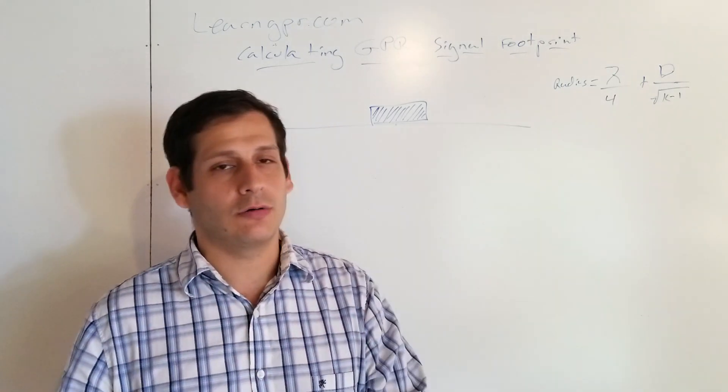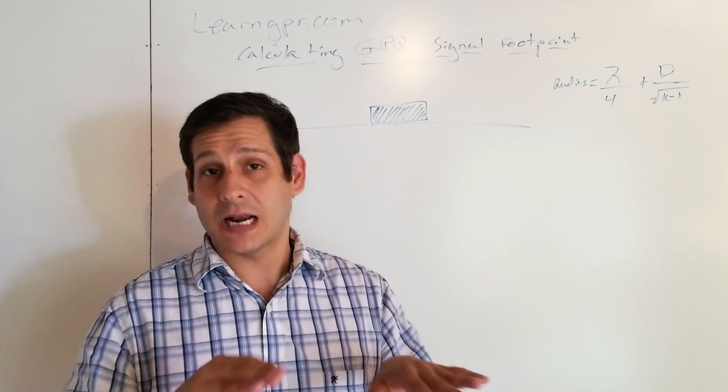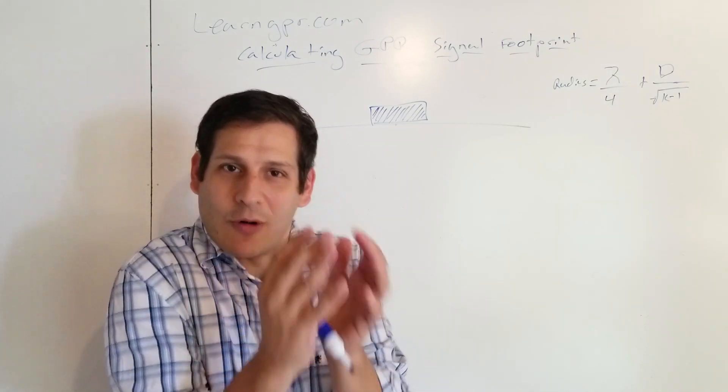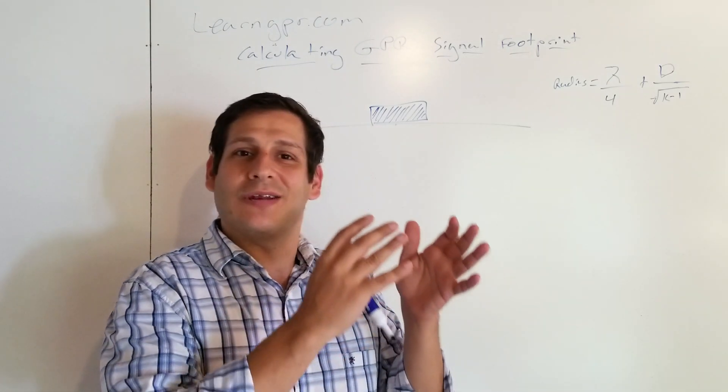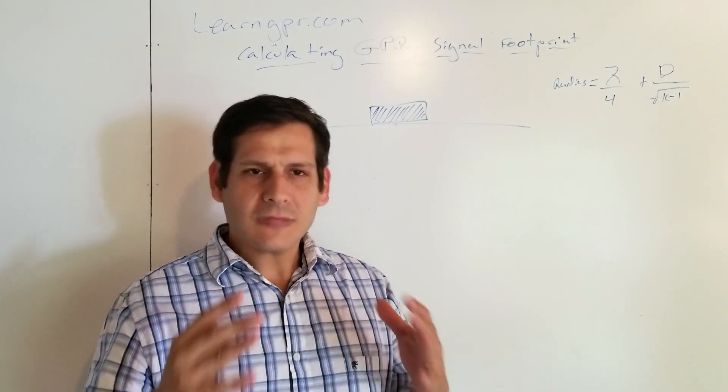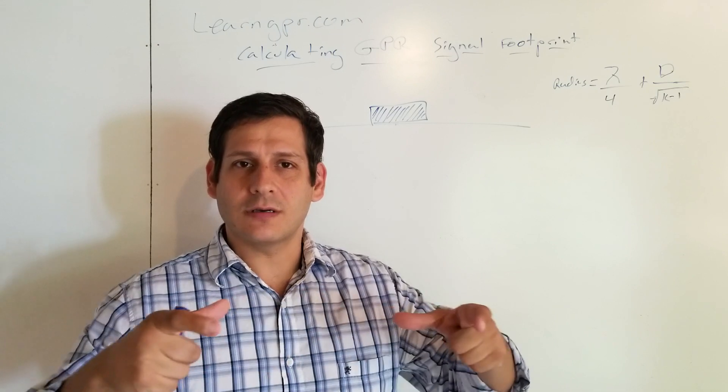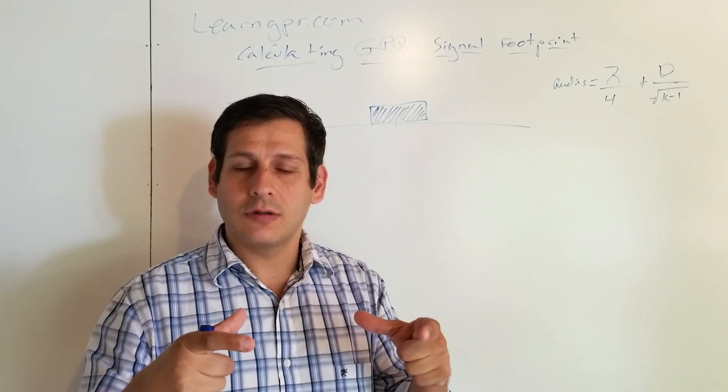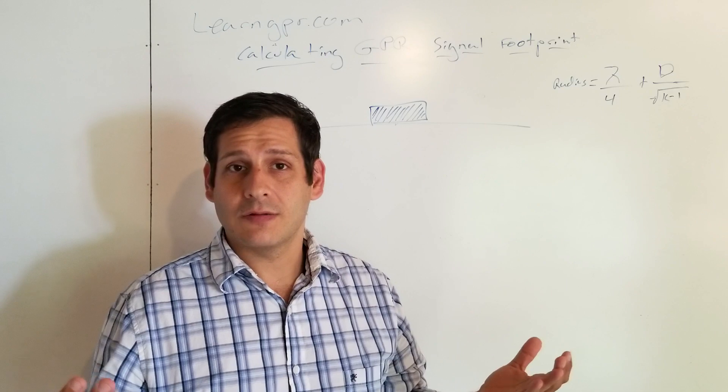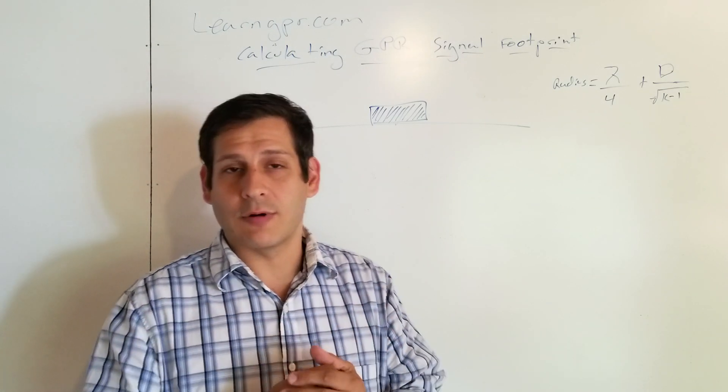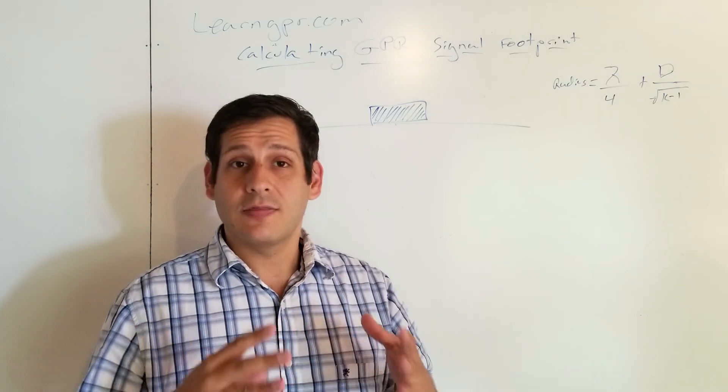And so if you haven't seen that video, feel free to go watch that. This video is not about that, it's about one of the components of the equation to estimate rebar diameter. And so one of the components of the equation is what's the footprint of the GPR antenna signal at any given depth, right? That's kind of what they were asking about, they said how do you calculate that footprint?